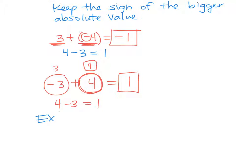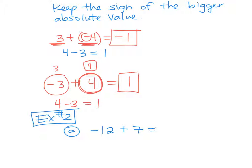So this is example 2. Let's say we have negative 12 plus 7. First thing you have to ask yourself is: do they have the same sign or different signs? Different signs. So when they're different, do you add or subtract? You subtract. So you're going to think of this problem as 12 minus 7. What is 12 minus 7? 5. We subtracted them. We want the sign of the bigger absolute value — would that be 12 or 7? 12. That sign is negative. So my answer is negative 5.